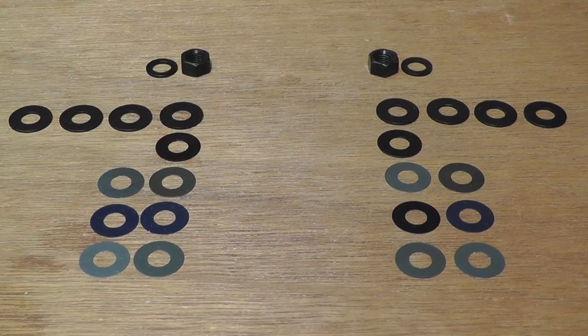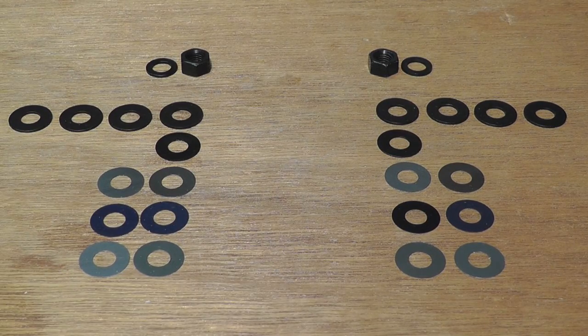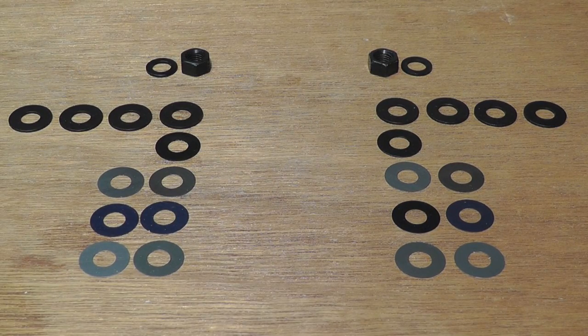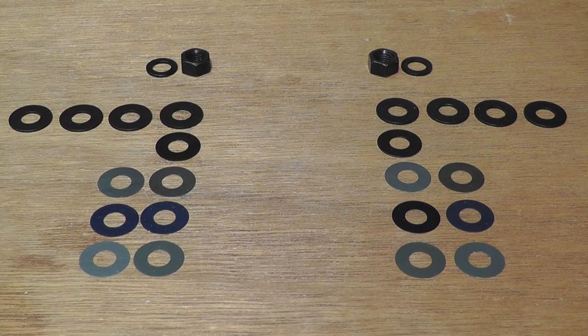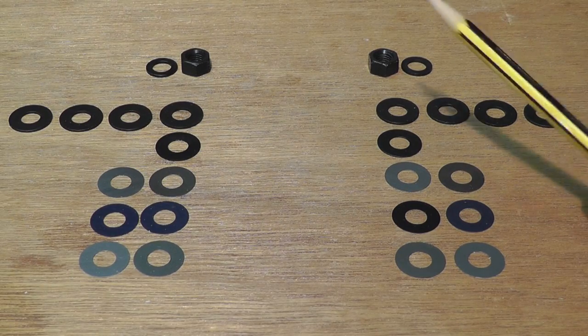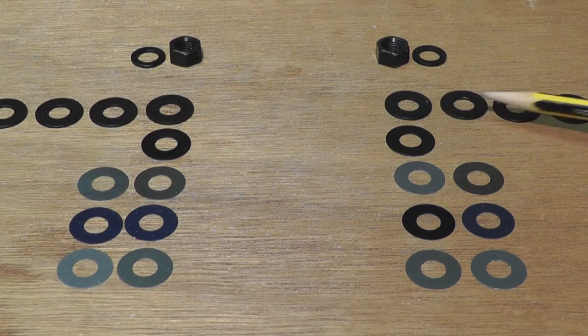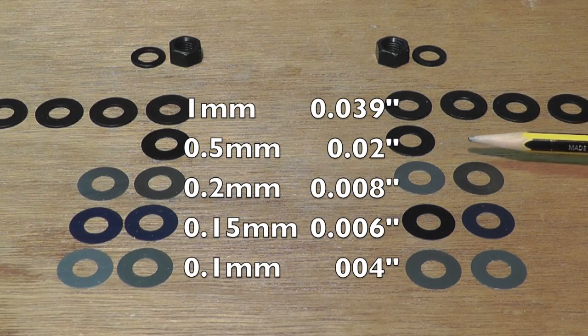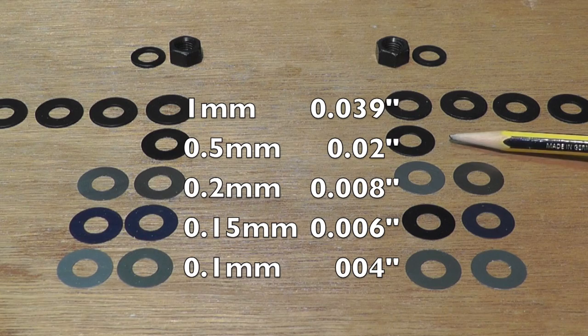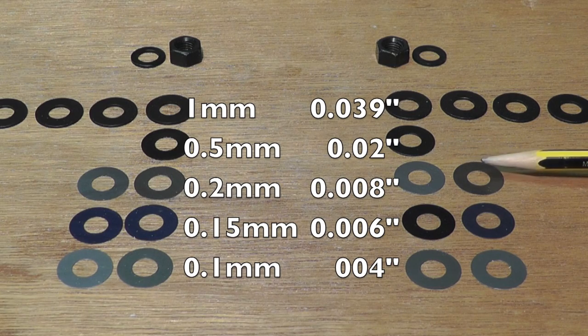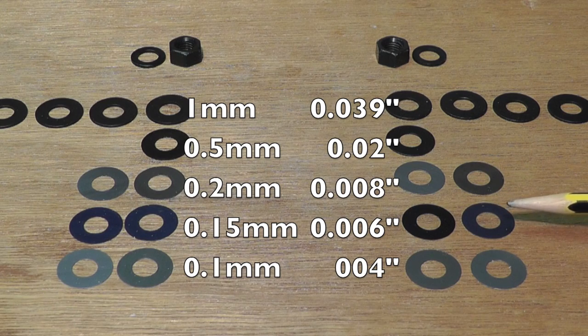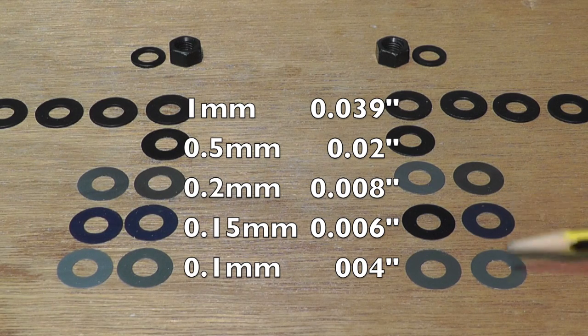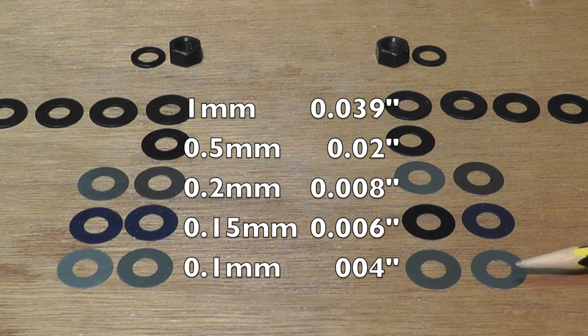What makes these router bits adjustable are these spacers, and we have a whole variety of different spacers that you can use. We have four one millimeter spacers, then we have one half millimeter, two point two millimeters, two point one five millimeters, and two point one millimeters.